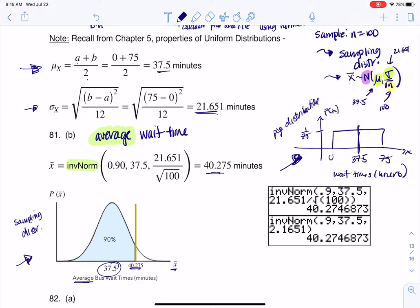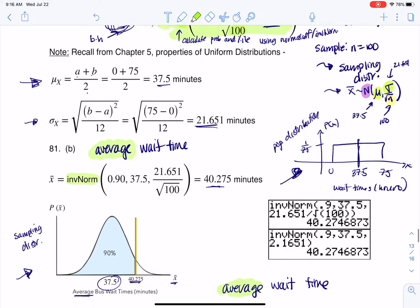Alright, 82. It says, would you be surprised, based on some sort of numerical calculation, if the sample average wait time for the 100 riders is less than 30 minutes? And I want you to hear that, again, it said average wait time. That is a huge clue. It didn't just say wait time. It said average. So because it says average, we're going to be back here on the sampling distribution.